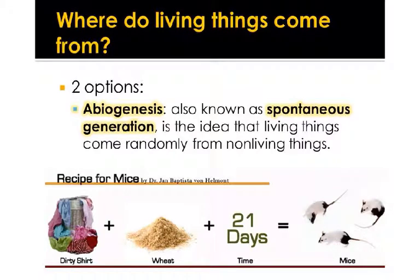Scientists wanted to figure out where the first living things on Earth came from. They had two ideas. The first idea is abiogenesis — 'bio' means alive, 'genesis' means to make or create, and 'a-' means not — so abiogenesis, also known as spontaneous generation, is the idea that living things come randomly from non-living things.